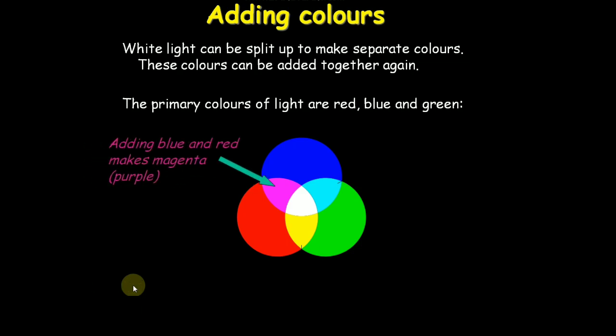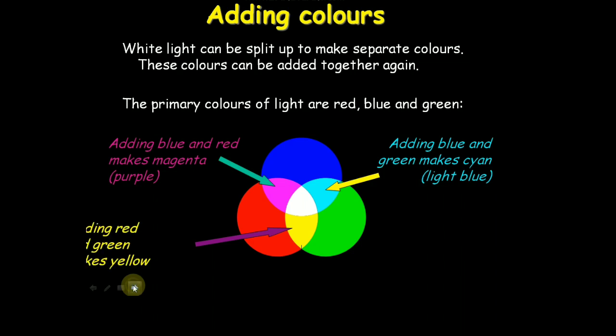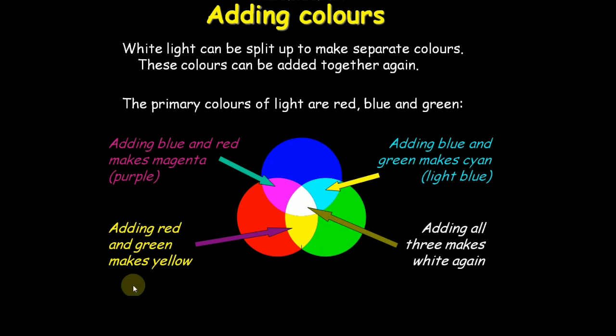Adding blue and red makes magenta color purple. Adding blue and green makes cyan light blue. Adding red and green makes yellow color. Adding all three makes white again.